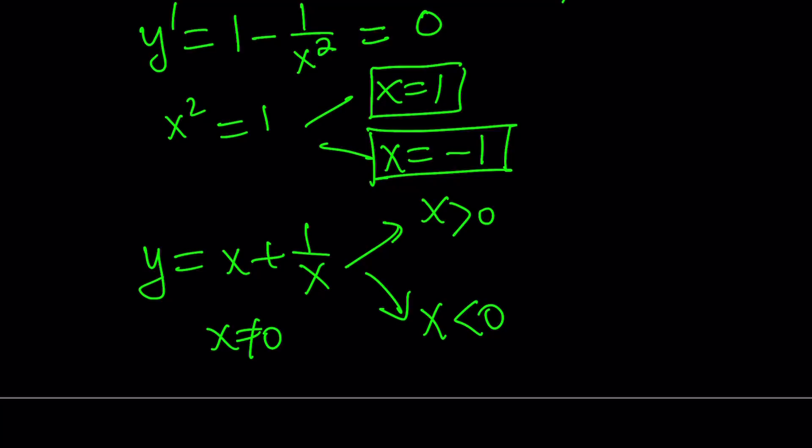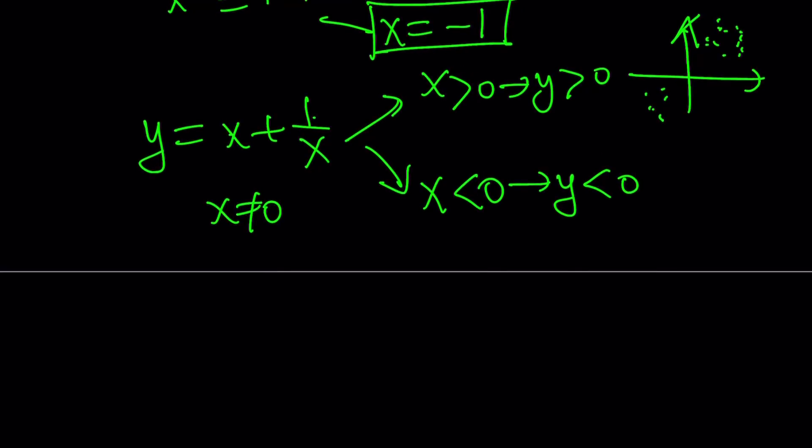Since x cannot equal 0, we can safely say what happens if x is positive, and what happens if x is negative? So if x is positive, y is going to be positive, because positive plus positive. And if x is negative, y is going to be negative. So you know what that's supposed to mean? It means that your graph is going to be in this quadrant and in this quadrant. You're not going to use quadrant 2 and quadrant 4.